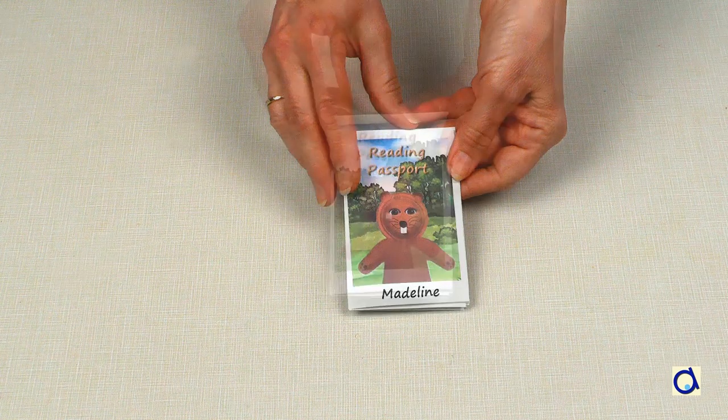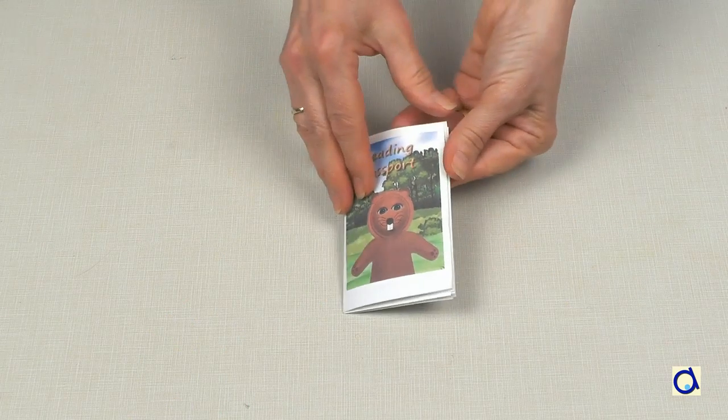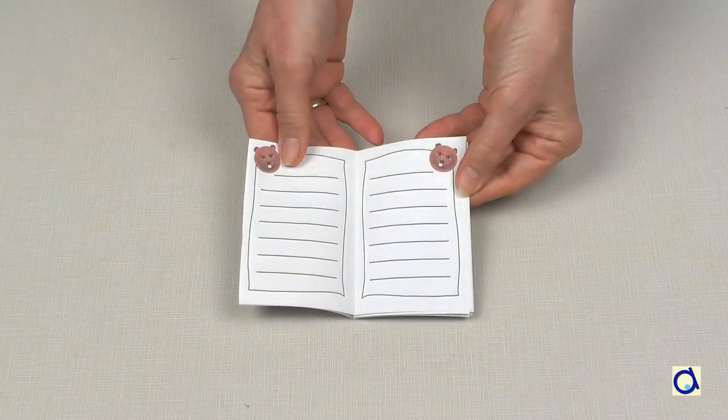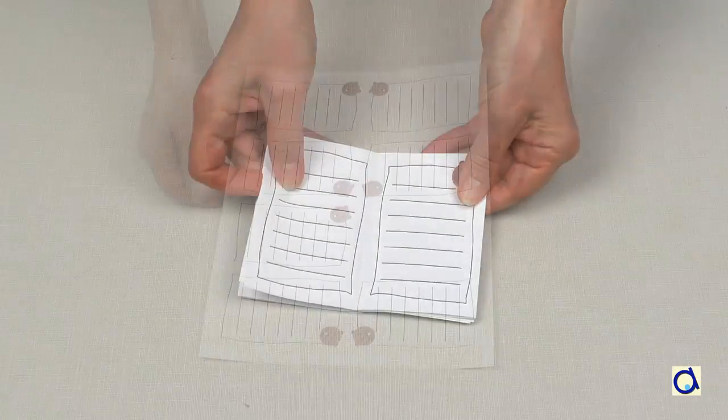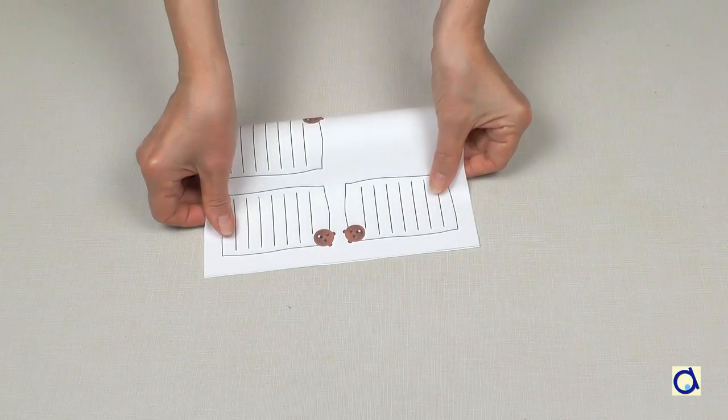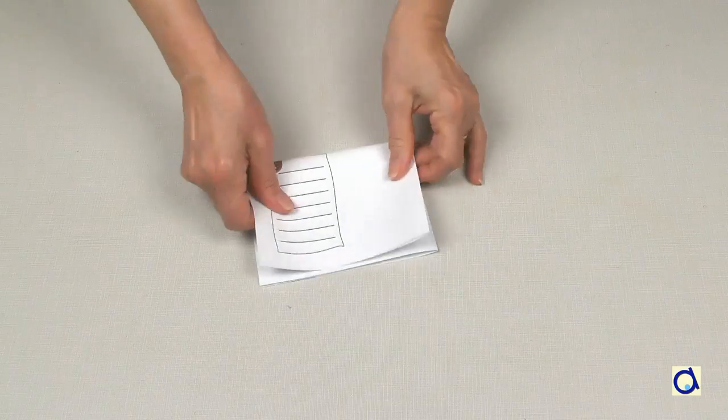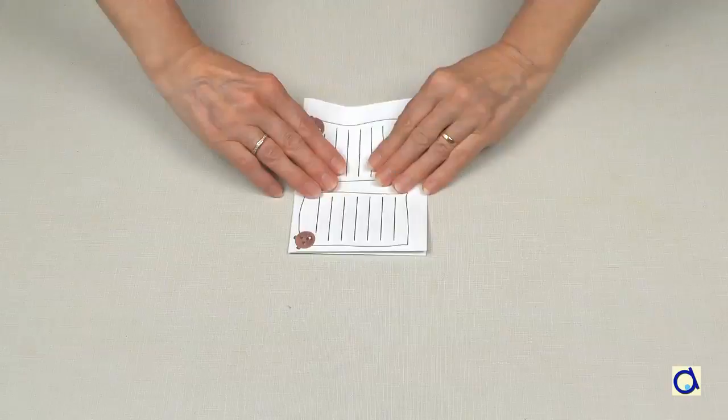With this little passport, children can register up to seven book titles. If you want to add more pages to your passport, print the additional model with the blank cover page. Fold the sheet in the same way that you did for the passport.